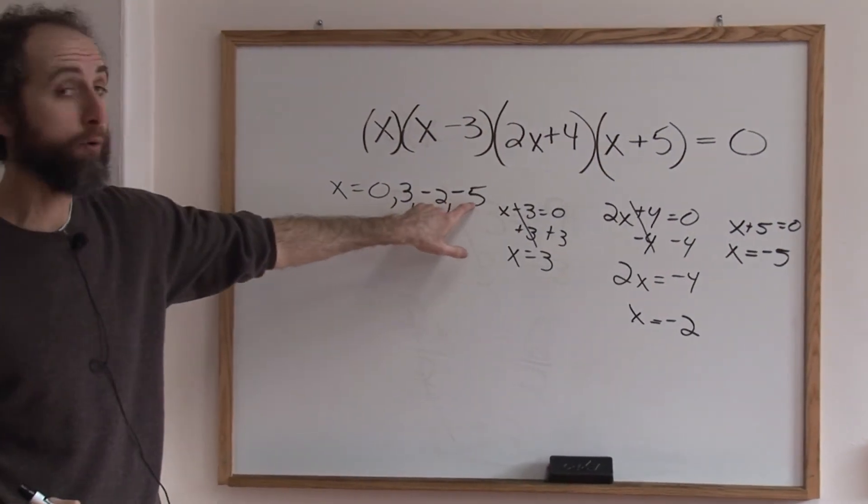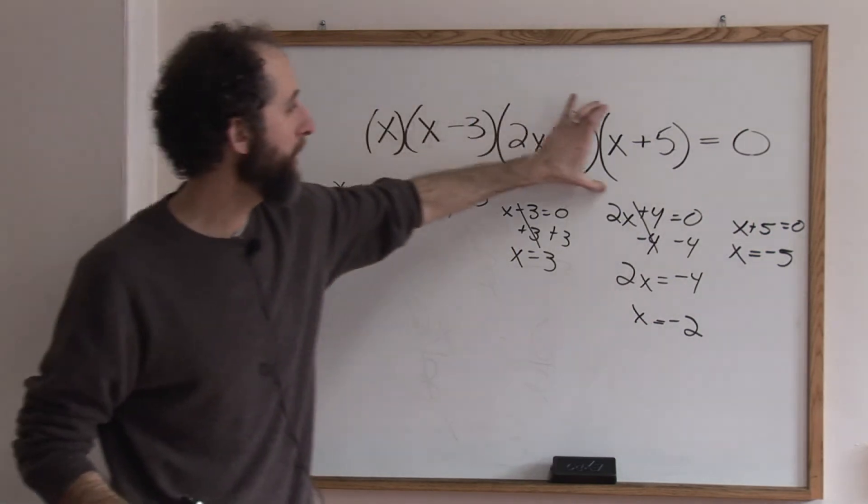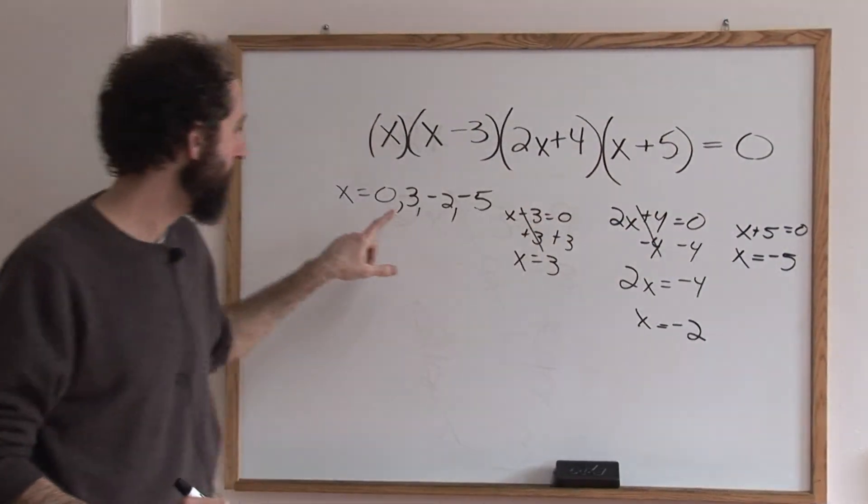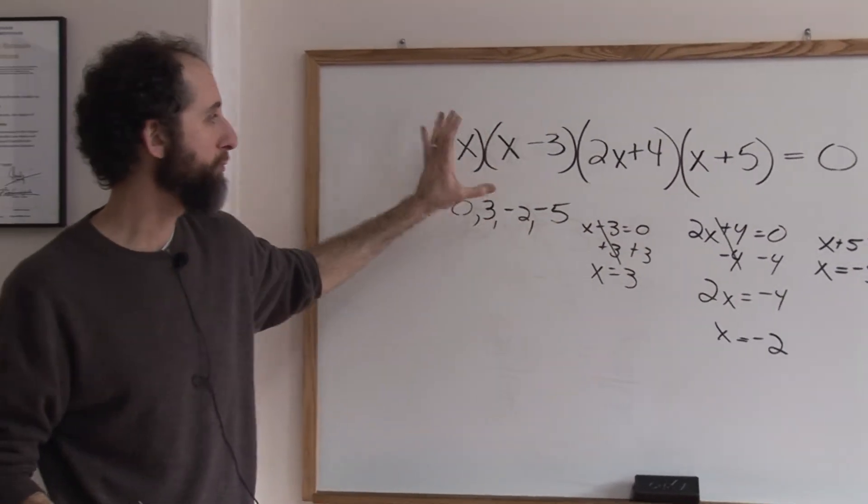So there are four solutions to this polynomial. Either zero, three, negative two, or negative five will make this work.